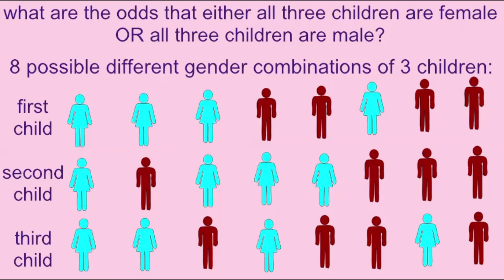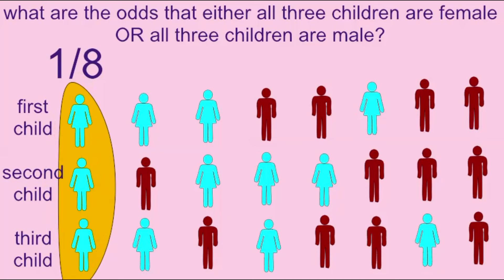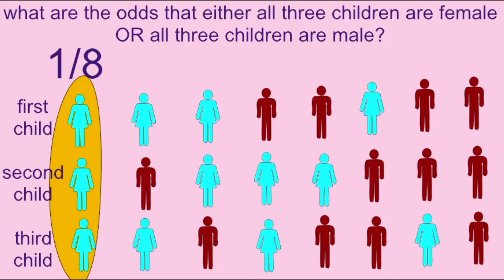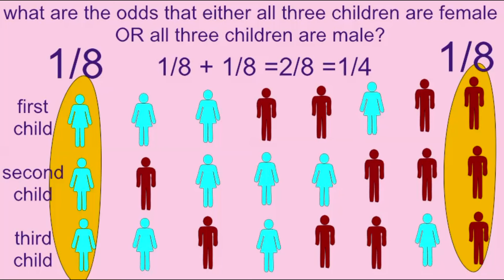In a family of three children, if one were to ask what are the odds that either all three will be female or all three would be male, one would use the sum rule because, once again, these events cannot both be true, and one used the word 'or' in the question. If the odds of having three female children is 1 in 8, and the odds of having three male children is 1 in 8, adding these two probabilities together: 1/8 plus 1/8 equals 2/8 or 1/4.